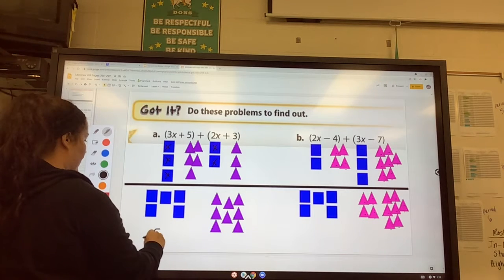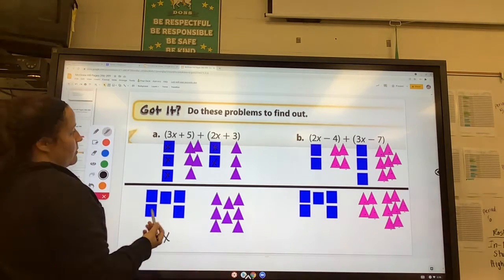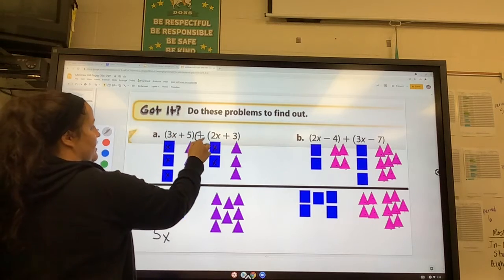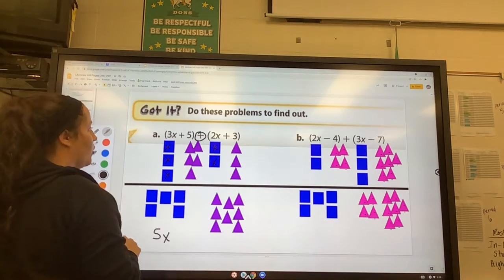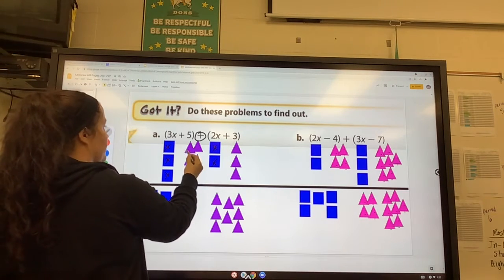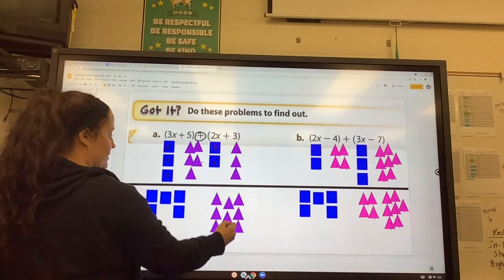Remember, parentheses don't matter because all you're doing is addition, so you can ignore the parentheses. Now we have plus five and plus three. These each stand for one, so one, two, three, four, five, six, seven, eight. There's eight numbers, so it would be 5x plus 8 simplified.